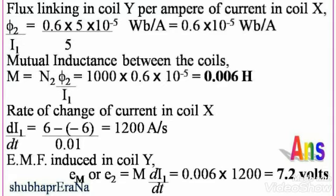Flux linking in coil Y per Ampere of current in coil X is given by φ₂/I₁ = 0.6 × 5×10⁻⁵ divided by 5, because 60% of the flux produced by one coil links the other. That gives 0.6×10⁻⁵ Weber per Ampere. Mutual inductance M = N₂ × (φ₂/I₁) = 1000 × 0.6×10⁻⁵ = 0.006 Henry.